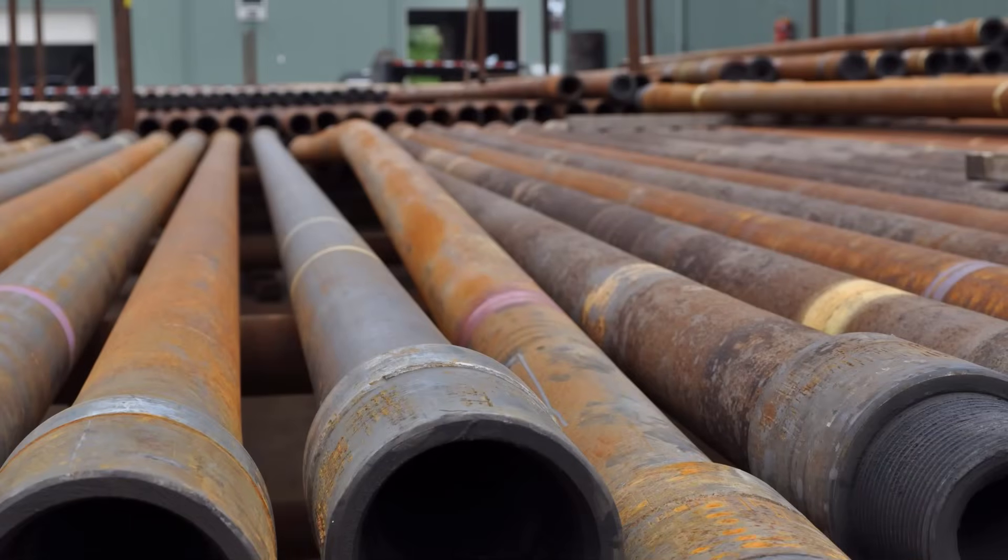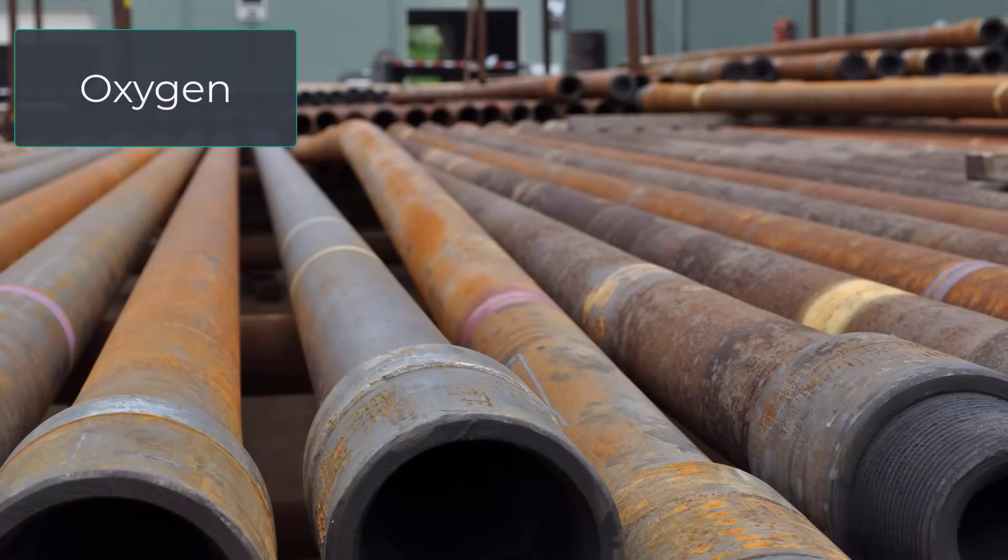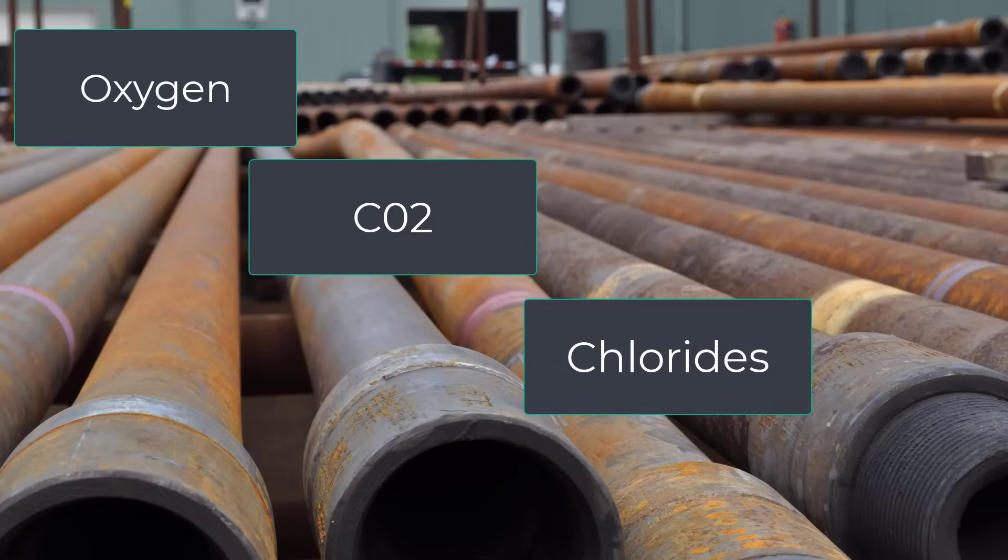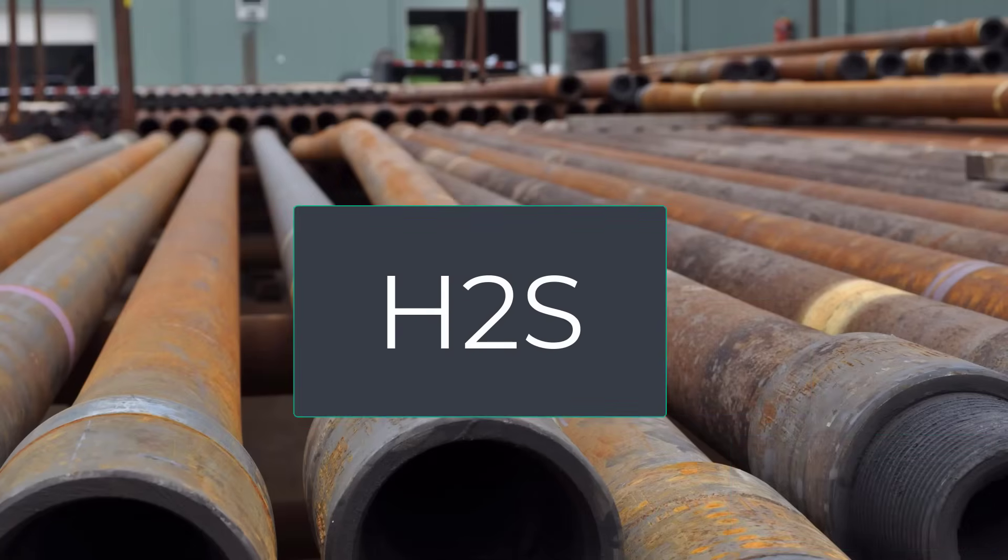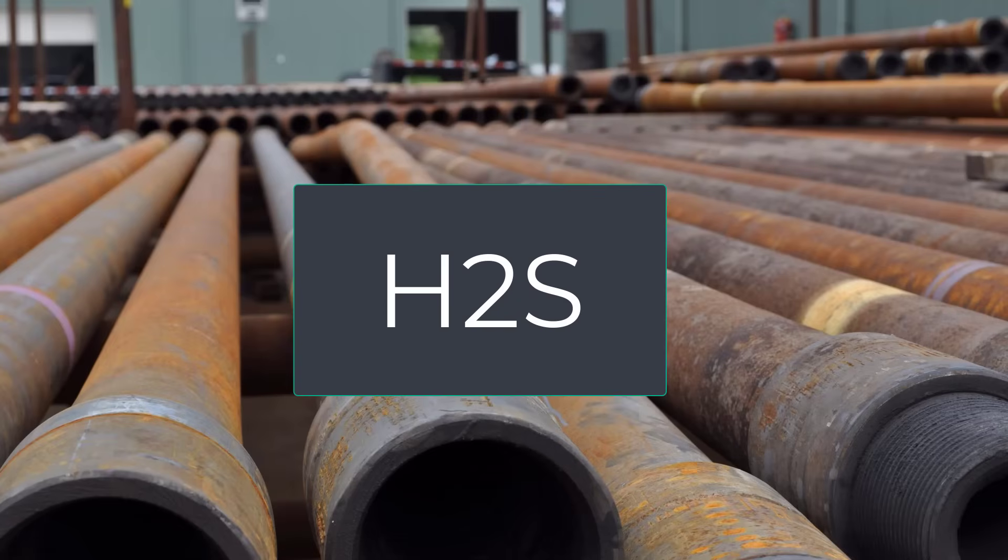Pipe corrosion occurs due to the presence of oxygen, carbon dioxide, chlorides, and hydrogen sulfide, popularly known as H2S. H2S is the most corrosive element for steel pipe.